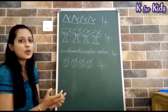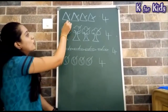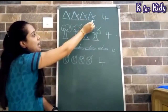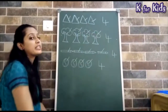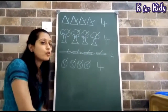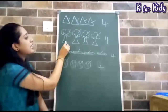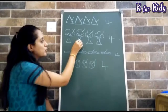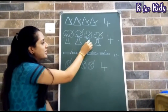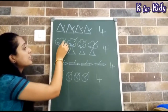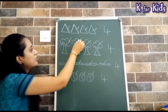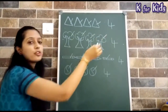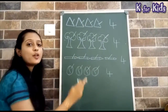Let's count again. 1, 2, 3 and 4. How many triangles do we have? 4. And what is this? Let's count them: 1, 2, 3 and 4. And again: 1, 2, 3 and 4. How many trees are made? 4.